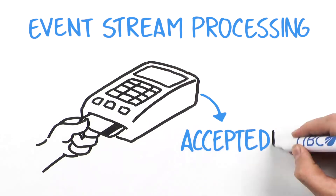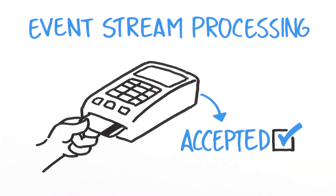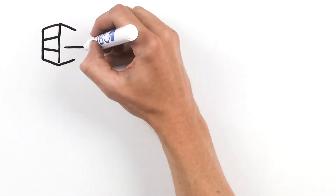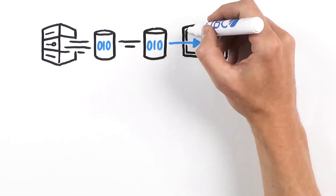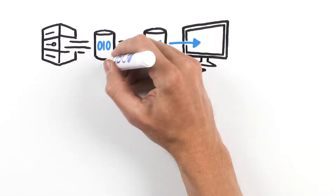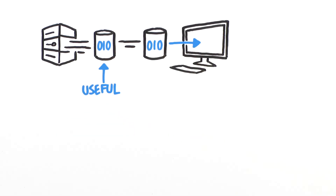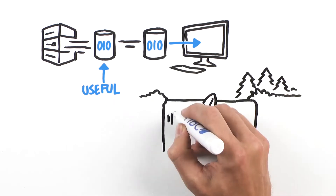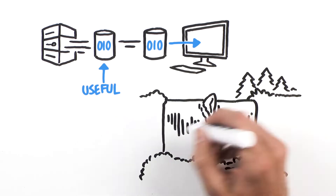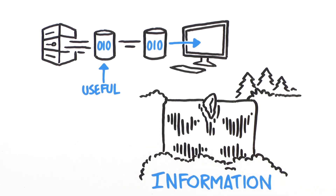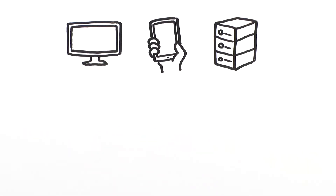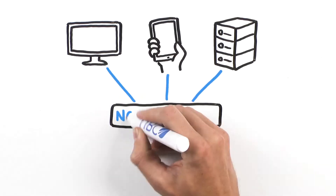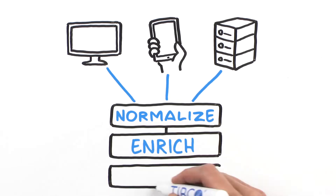Here's how event stream processing lets you predict and act while the value of your data is still high. All the information you need is already streaming across your messaging infrastructure — you just don't know which data is useful. You have so many data sources generating information at different rates and formats. With event stream processing, you connect to all your data sources and process to normalize, enrich, and filter data.